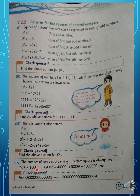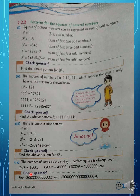A perfect square always ends with an even number of zeros. Numbers ending in an odd number of zeros cannot be perfect squares. For example, numbers with 2 zeros or 4 zeros can be perfect squares, but if a number ends in an odd count of zeros like 60, it will not be a perfect square. So this gives us four patterns for squares.